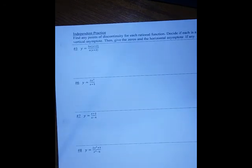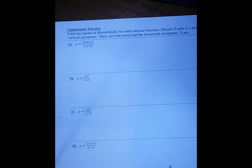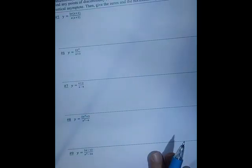In the independent practice, you will first have a page of questions in which you're asked just to identify the points of discontinuity, which are the vertical asymptotes and holes, the horizontal asymptotes and the zeros, or the oblique asymptote if there is one.